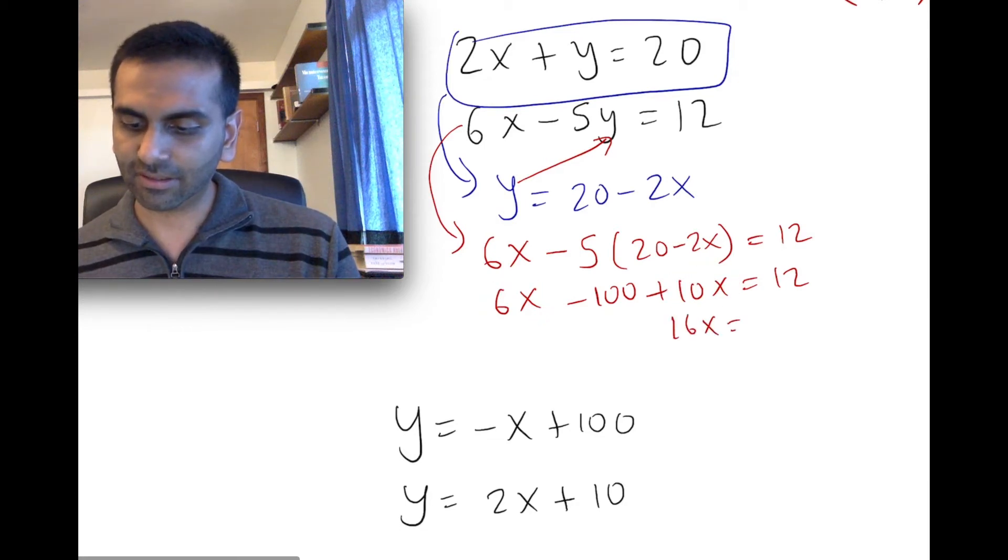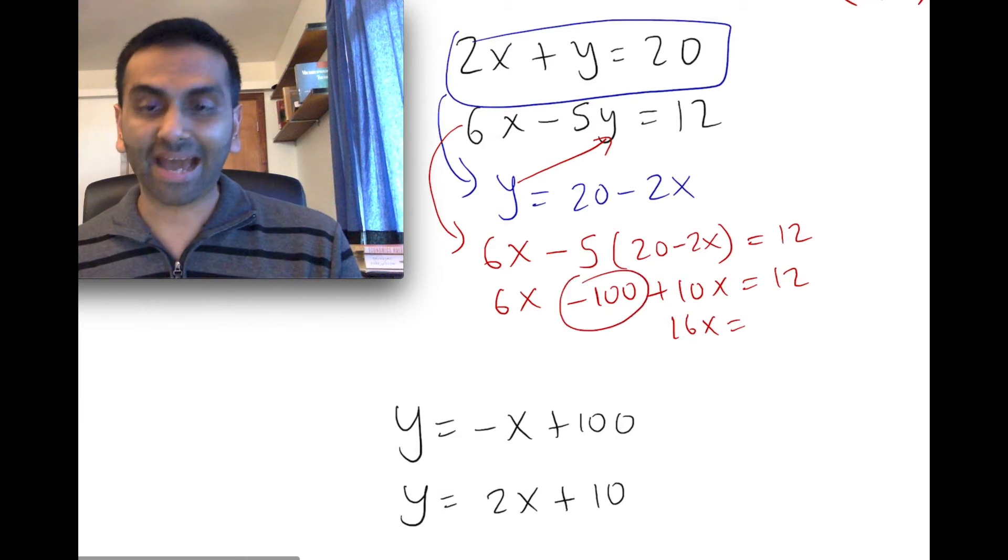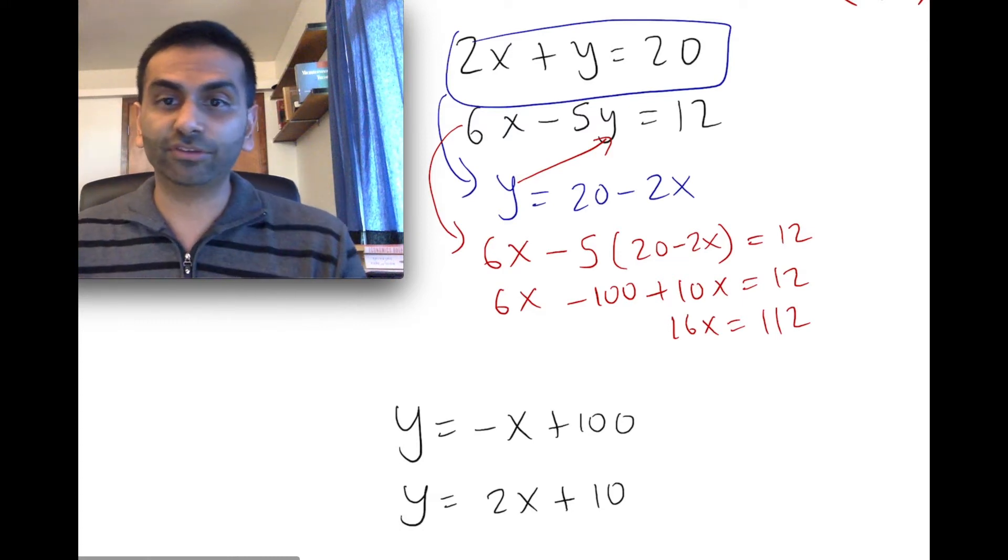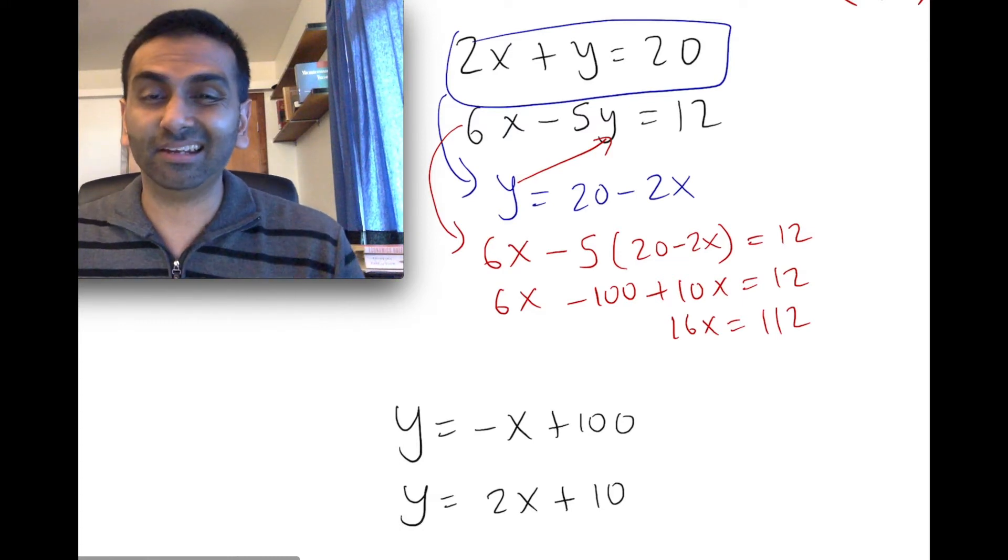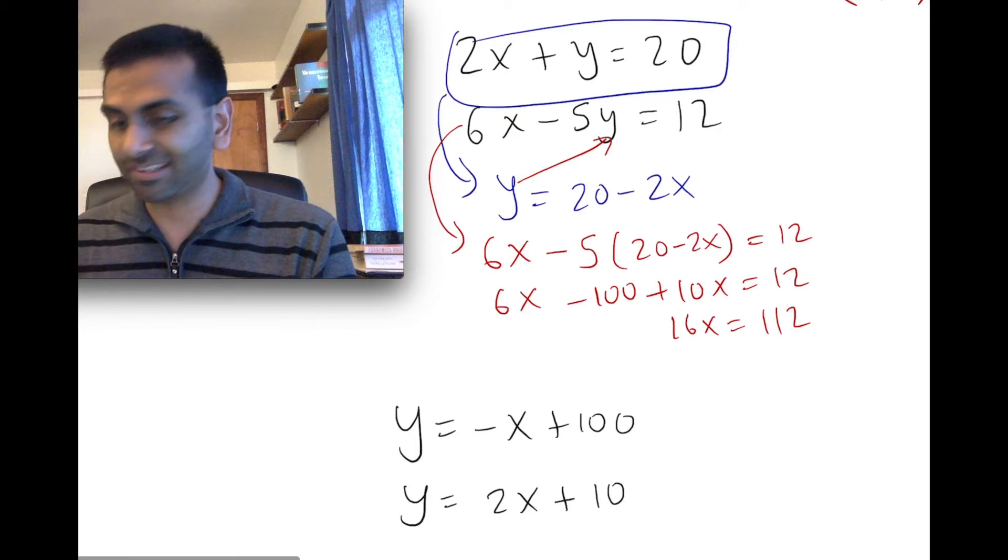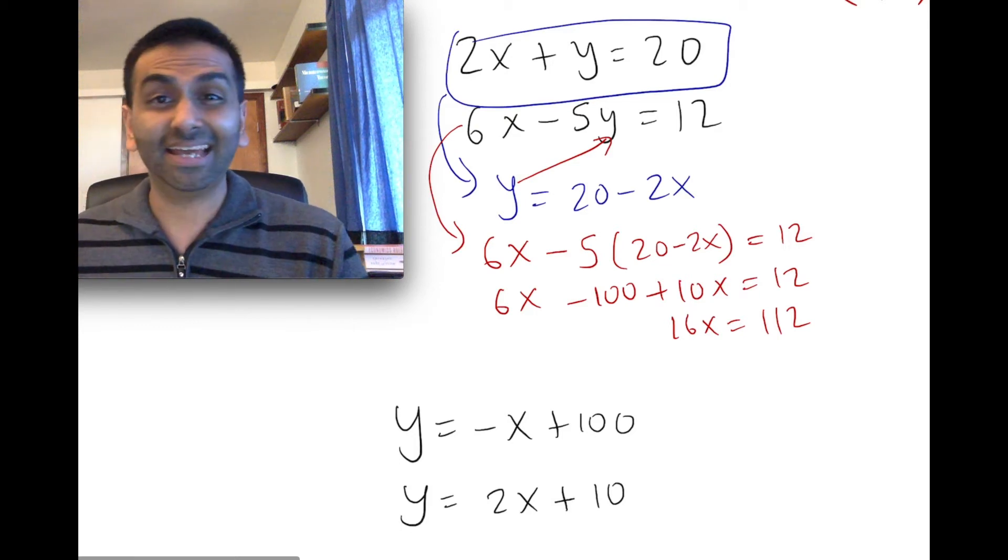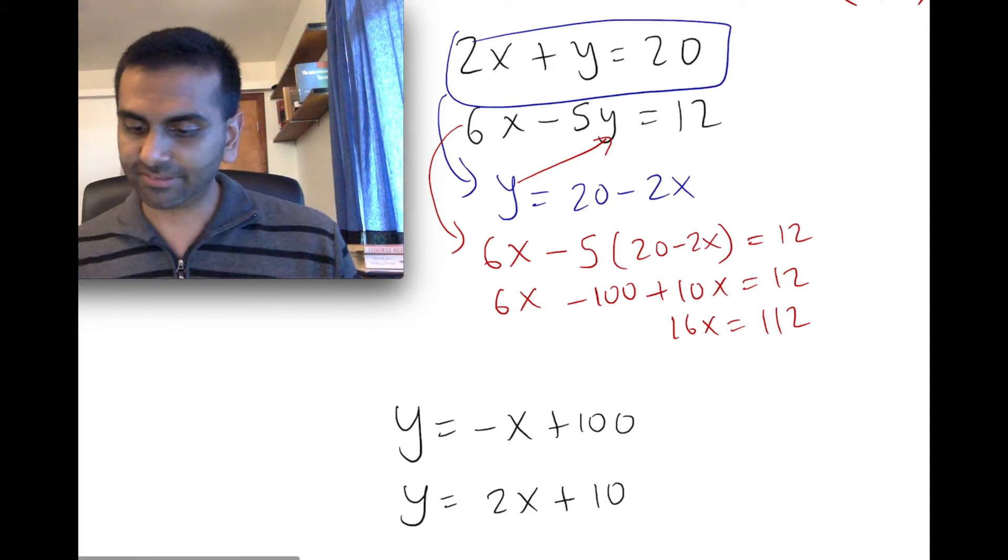And then we can just do 112 divided by 16. I can't do that in my head, so I'm just going to do it in my calculator. 112 divided by 16, and you get 7. So x is equal to 7.